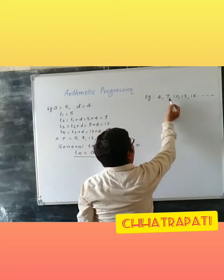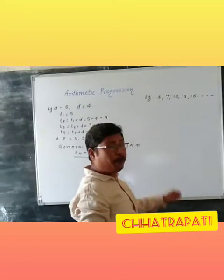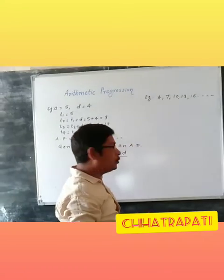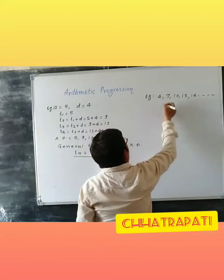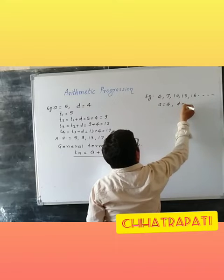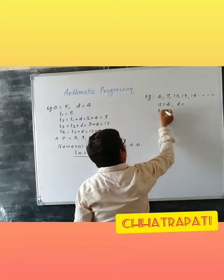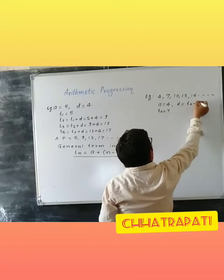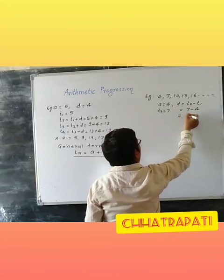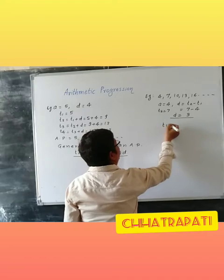If we are asked to find the 18th term of this AP, we can use the general term formula. The given data: A is equal to the first term, which is 4. Common difference D is T2 minus T1, that is 7 minus 4, which is equal to 3. And it is required here to find the 18th term.